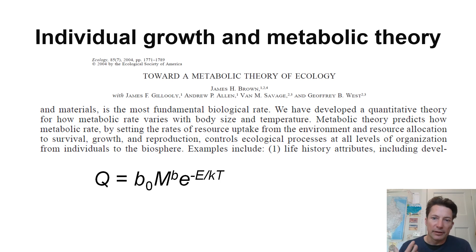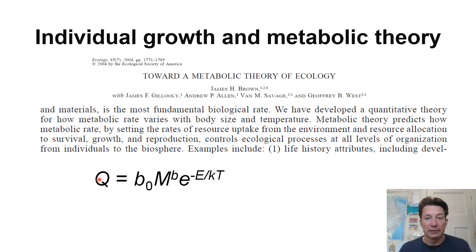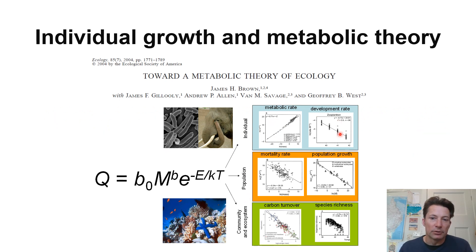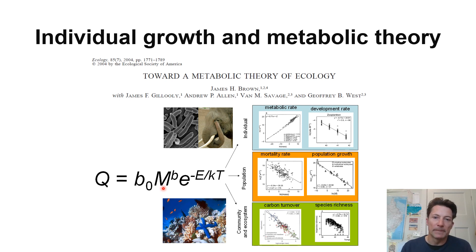Metabolic theory is really about individual growth models. While the discussions about metabolic theory focus on this equation — in the metabolic theory of ecology as promoted by Jim Brown and colleagues — metabolic rate is an allometric function of body mass with a temperature correction. Brown and colleagues emphasize the pattern that things at the individual level, like metabolic rate and development rate, but also things at the population level like mortality rate and population growth, and things at the community and ecosystem level like carbon turnover and species richness, have signatures of this constraint of energy flowing through individuals in terms of how it scales with size and responds to temperature.